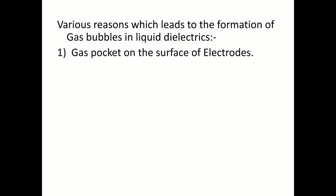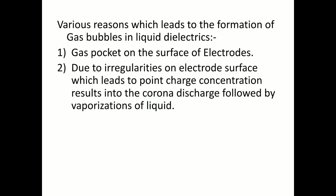The first reason is due to the presence of gas pockets on the surface of the electrode — it may be anode or it may be cathode. The second is due to the irregularities of the electrode surface, because of which point charges are formed, resulting in the formation of corona discharge. Once the corona discharge is initiated, this leads to the vaporization of liquid, and as a result, we have a bubble of gases as output in the liquid dielectric medium.